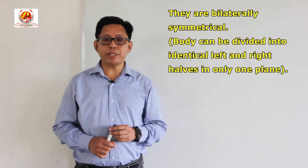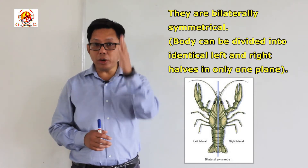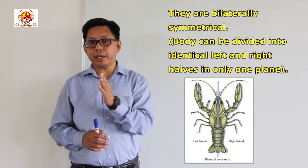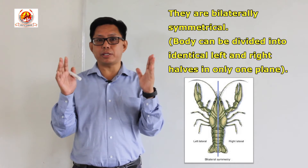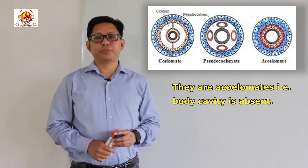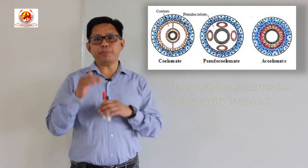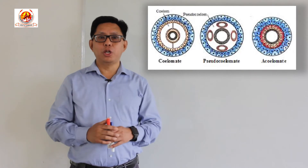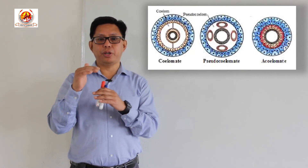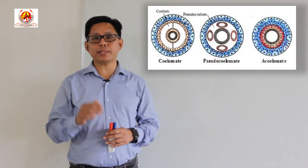Another important character is that they are bilaterally symmetrical. Bilaterally symmetrical means the body can be divided into two identical left and right halves only in one plane. Phylum Platyhelminthes are acoelomates — that means the body cavity is completely absent. The body cavity is the space between the body wall and the gut, and this space is filled up by a tissue known as parenchyma. Hence Platyhelminthes are known as acoelomates.